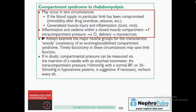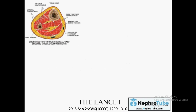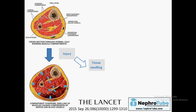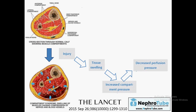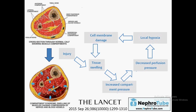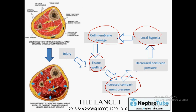Here we are talking about skeletal muscles — how pressure inside the muscle may increase when the muscle is injured. In rhabdomyolysis with muscle injury, there will be tissue swelling due to the injury, which will increase pressure. Increased pressure leads to decreased perfusion of the muscle, causing local hypoxia. Hypoxia causes more cell damage, more tissue swelling, and so on — a vicious cycle of increased compartmental pressure, hypoxia, and further tissue damage.